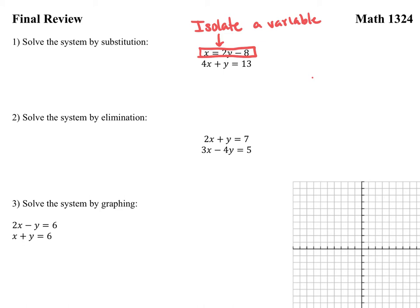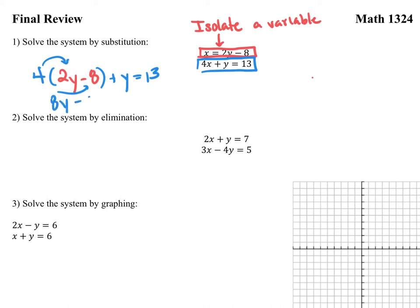In that bottom equation, which is 4x plus y equals 13, I'm going to replace that x with the term that is sitting here for x. So that's 4 times (2y minus 8), and then that's plus y equals 13. When I solve this, I'm going to go ahead and distribute out the 4 to both these terms. When I do that, I get 8y minus 32 plus y is equal to 13.